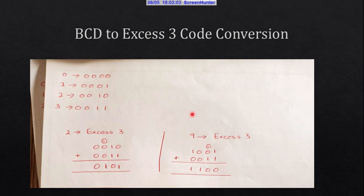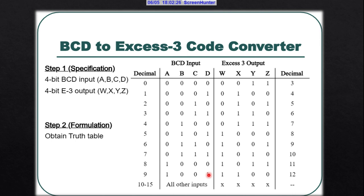Similarly, if we want the XS3 code of 9, we add 3 to the BCD code of 9, which is 1001. Adding 3 gives us 1100, which is the XS3 code of 9. From this table you can verify that the XS3 code of 2 is 0101 and the XS3 code of 9 is 1100.